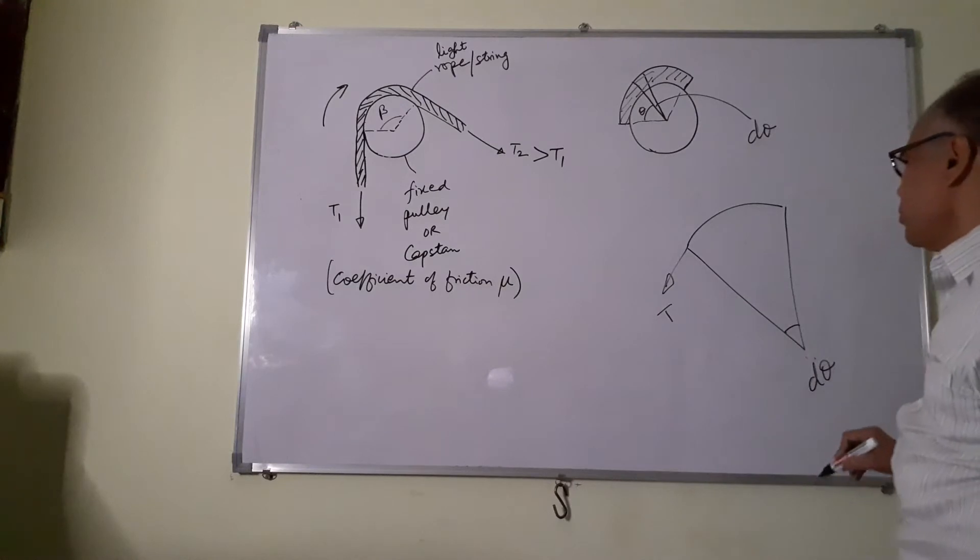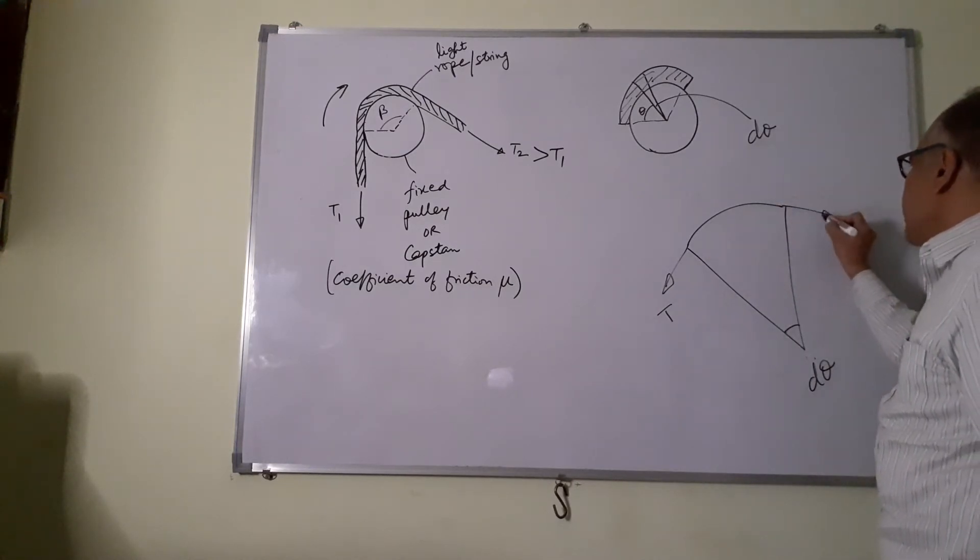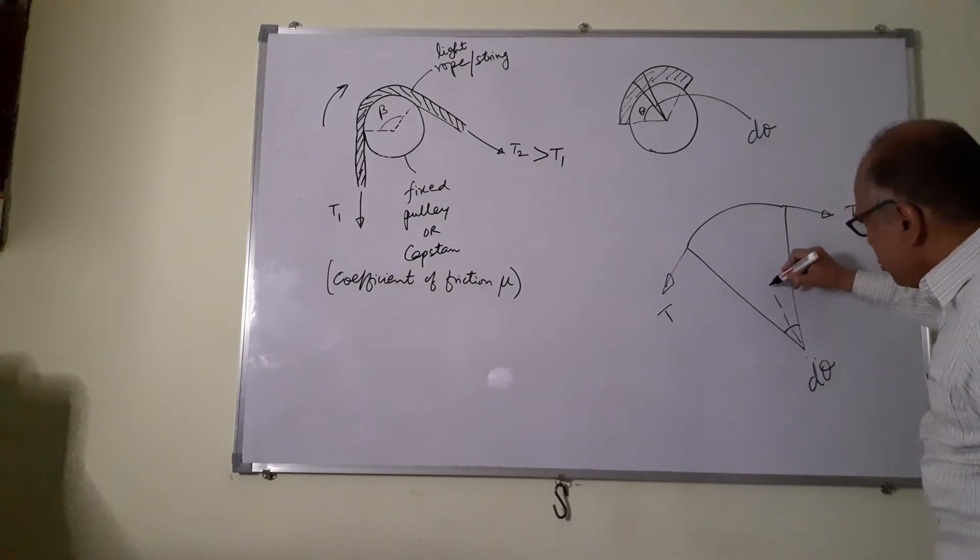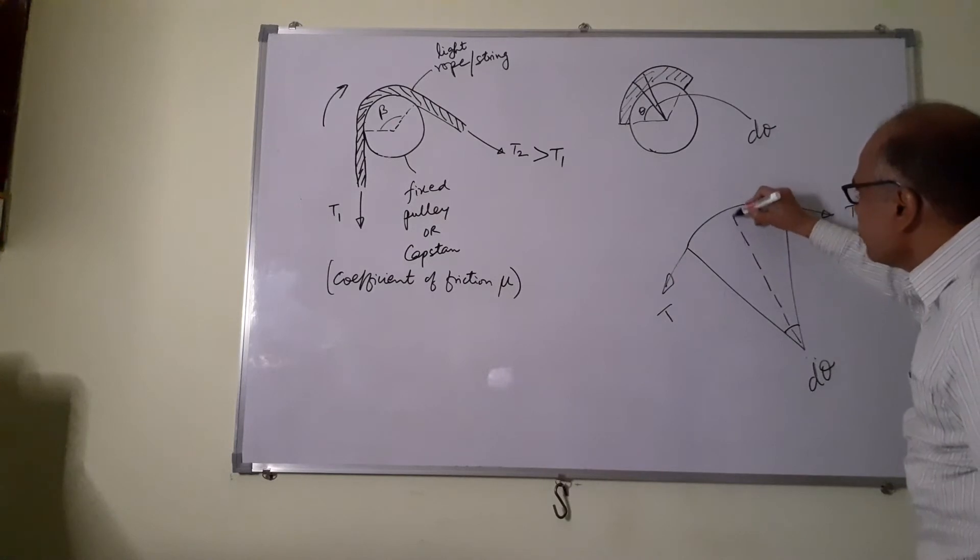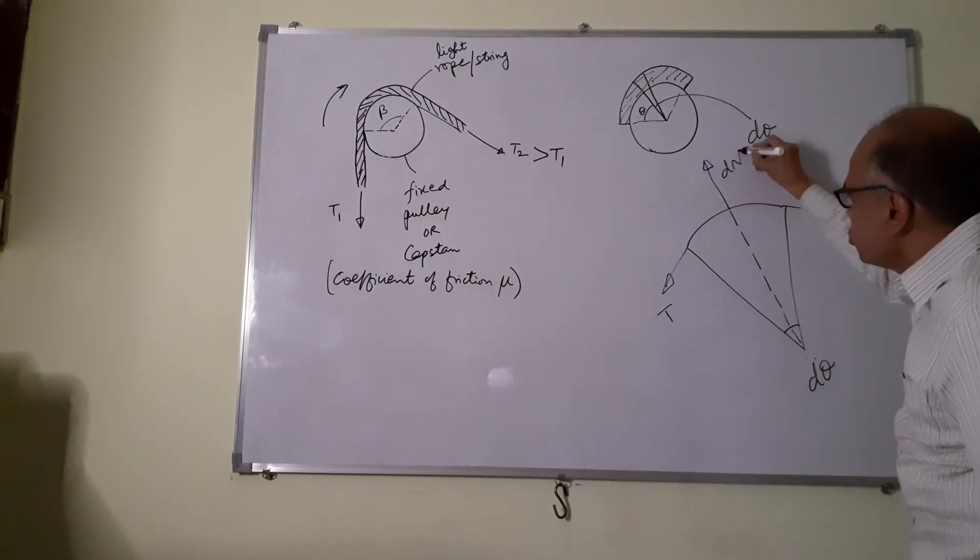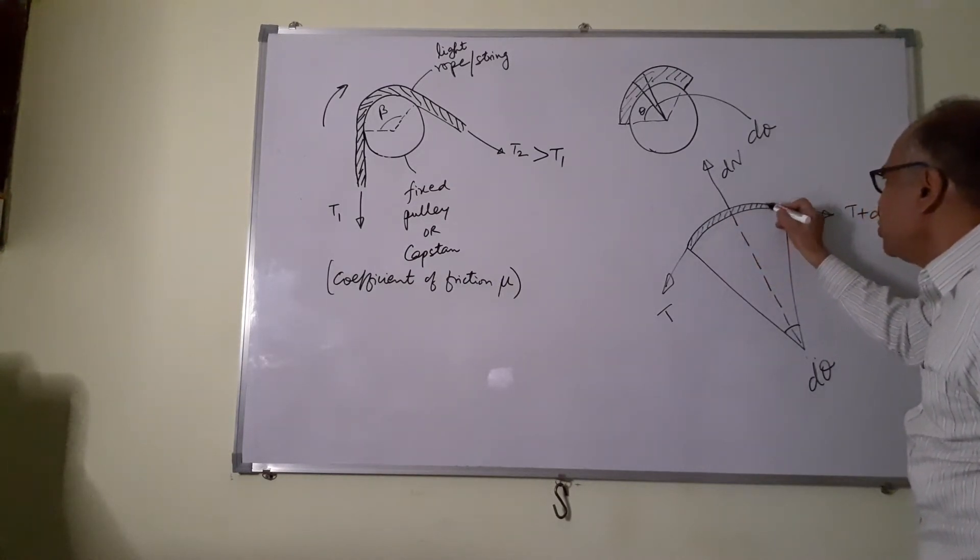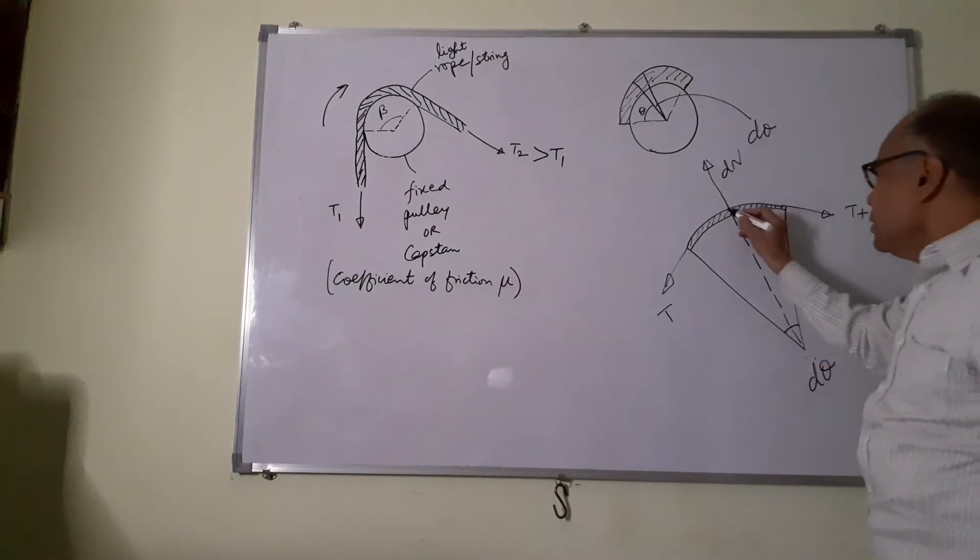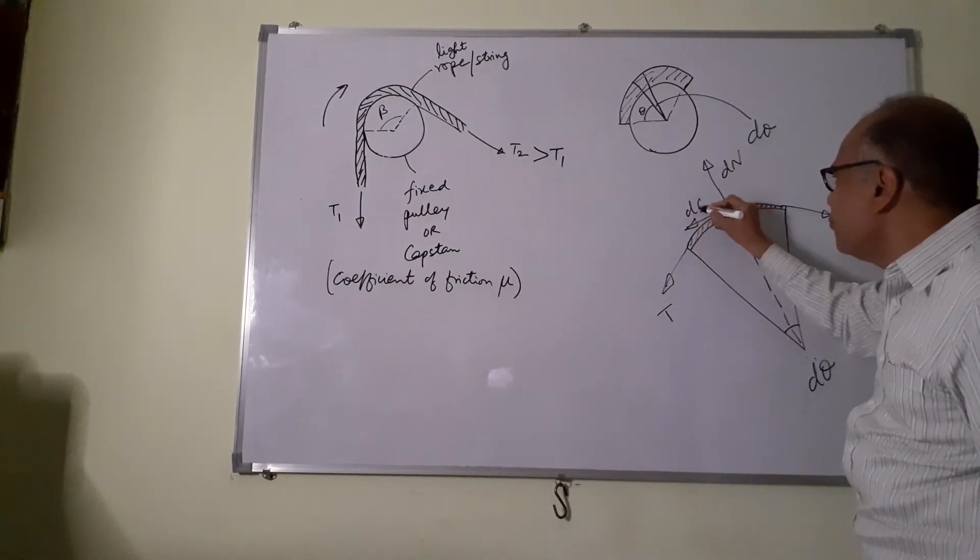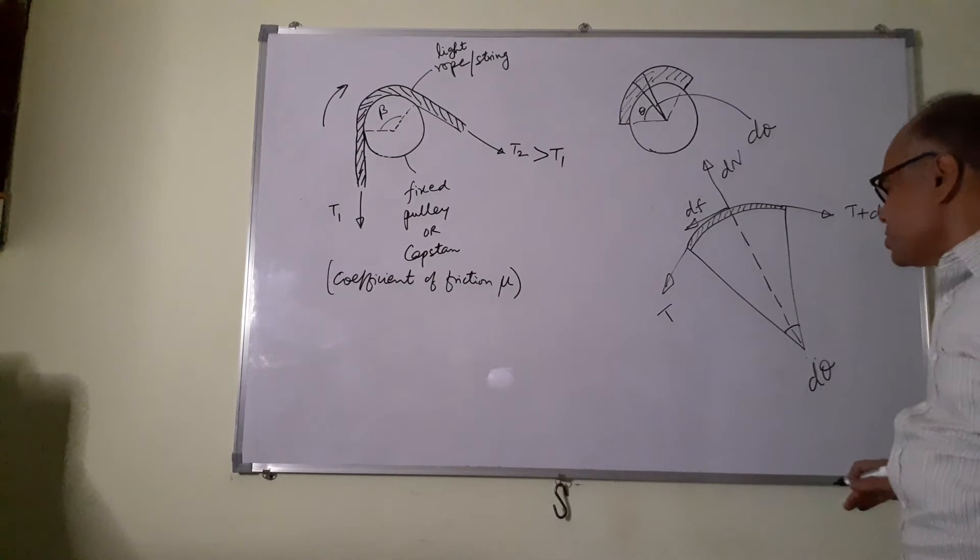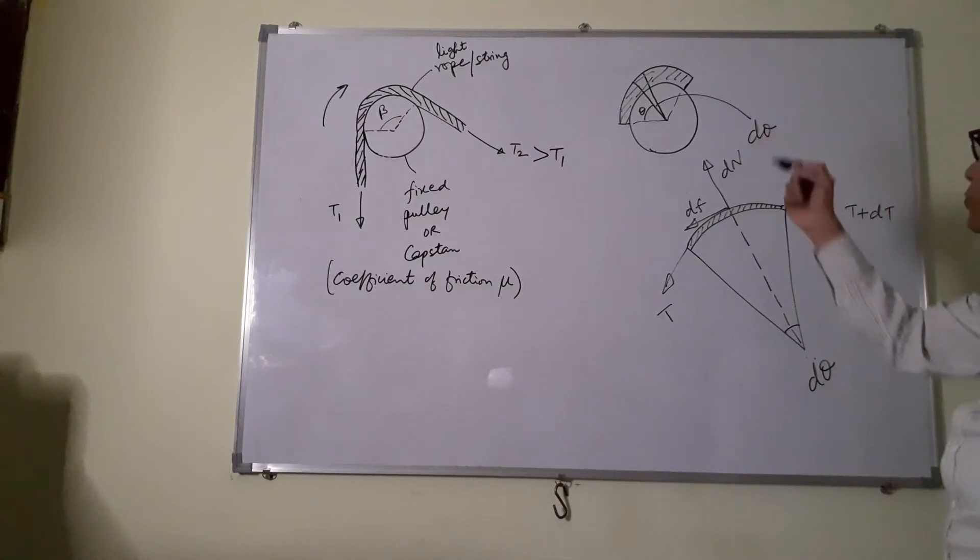And here you have the tension T. As you progress ahead, the tension is T plus DT. I shall draw an angle bisector and show Dn, the normal force due to this element of the string, normal force by the pulley on the string. There will be a frictional force Df. Because the string is going in the clockwise direction, the friction force will be anticlockwise.